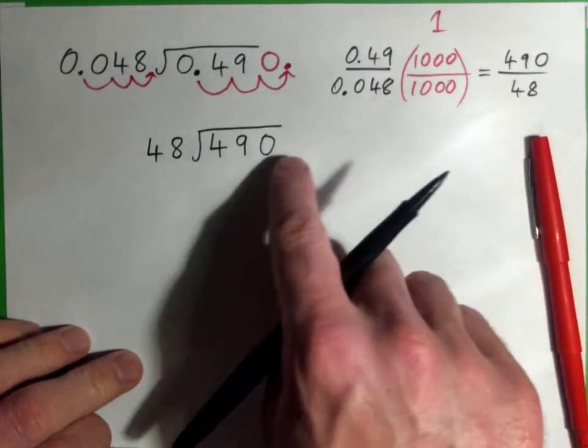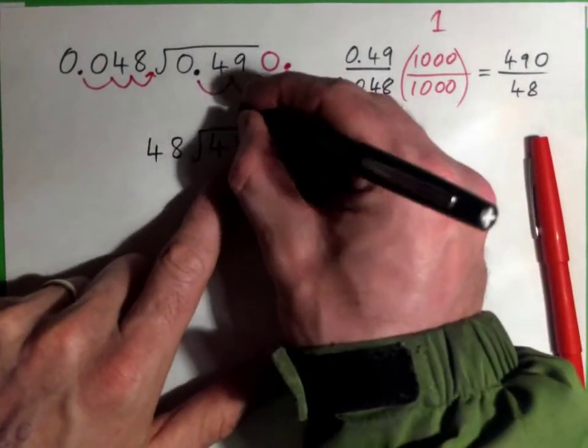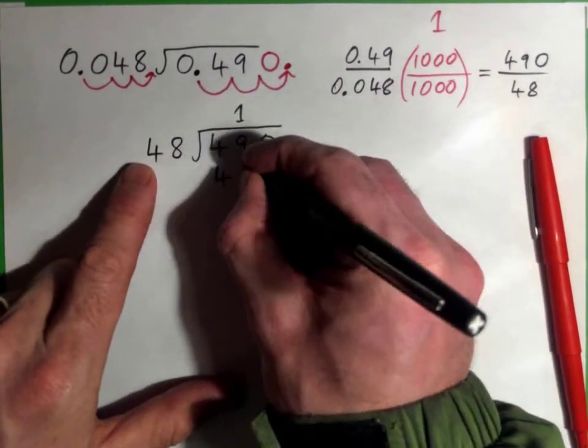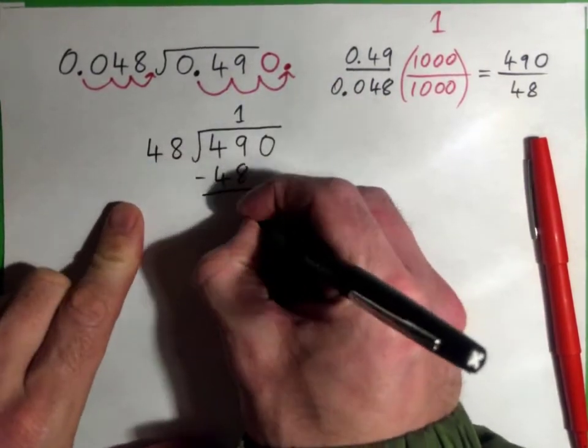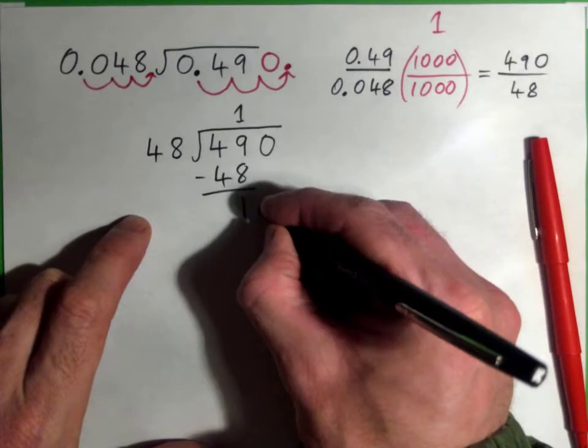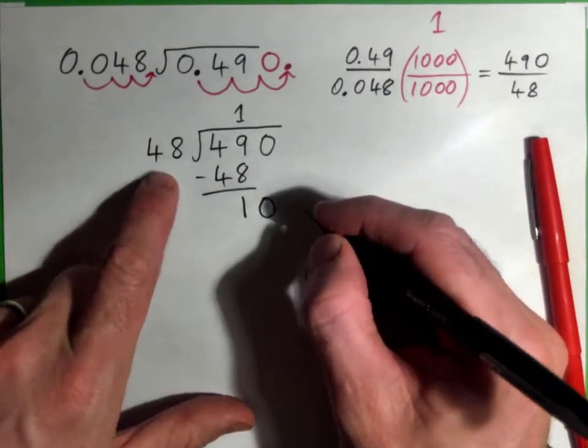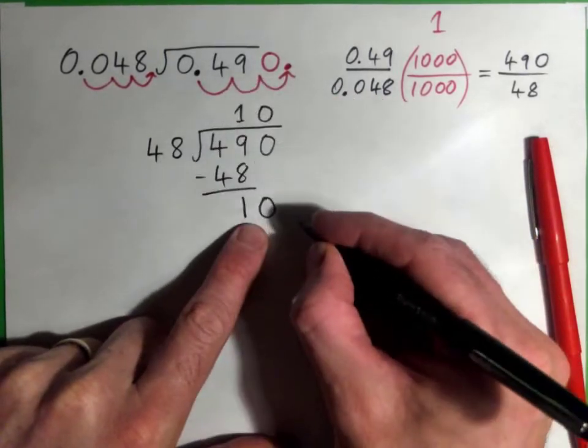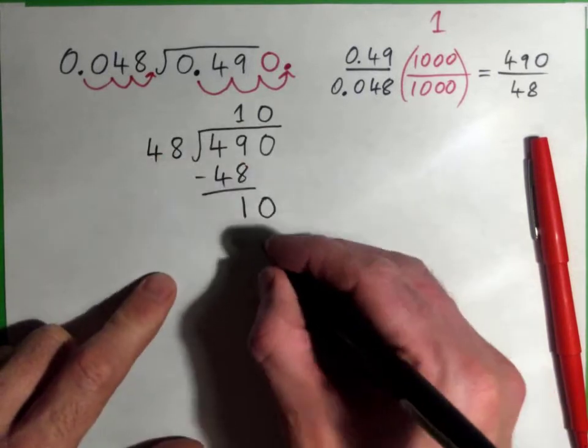So 490 divided by 48 is the same thing as 0.49 divided by 0.048. So 48 into 49 goes one time. 1 times 48 is 48. Then I'll subtract and we get 1. Then bring this 0 down to get 10. 48 into 10 goes 0 times. 0 times 48 is 0.